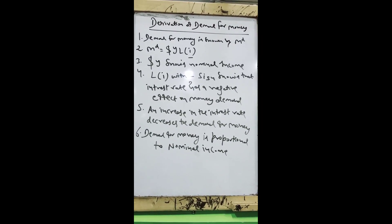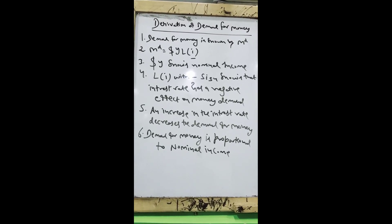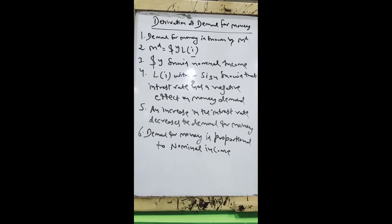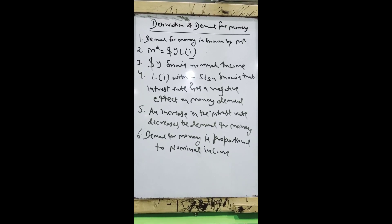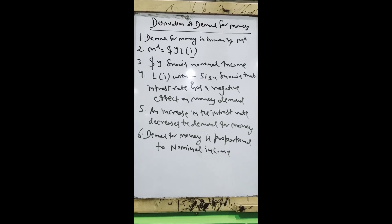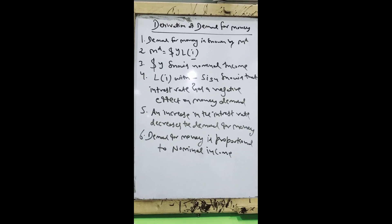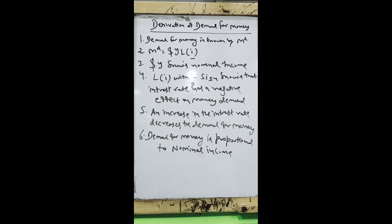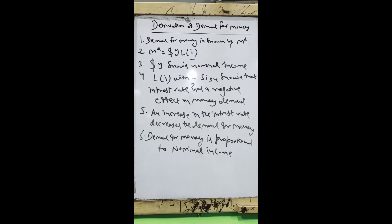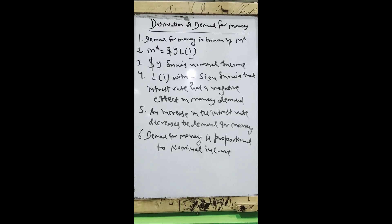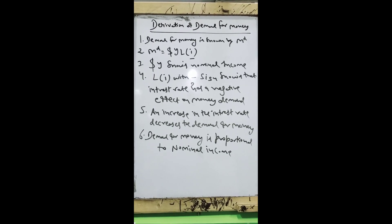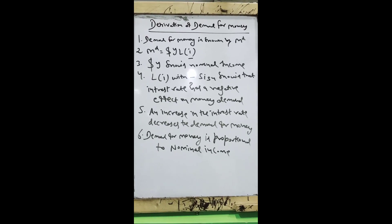Now I will teach you how to derive a demand for money function — first through a few steps and then diagrammatically. The money demand function is: MD = dollar Y · L(i), where there is a negative sign under i, indicating that interest rate has a negative effect on money demand.